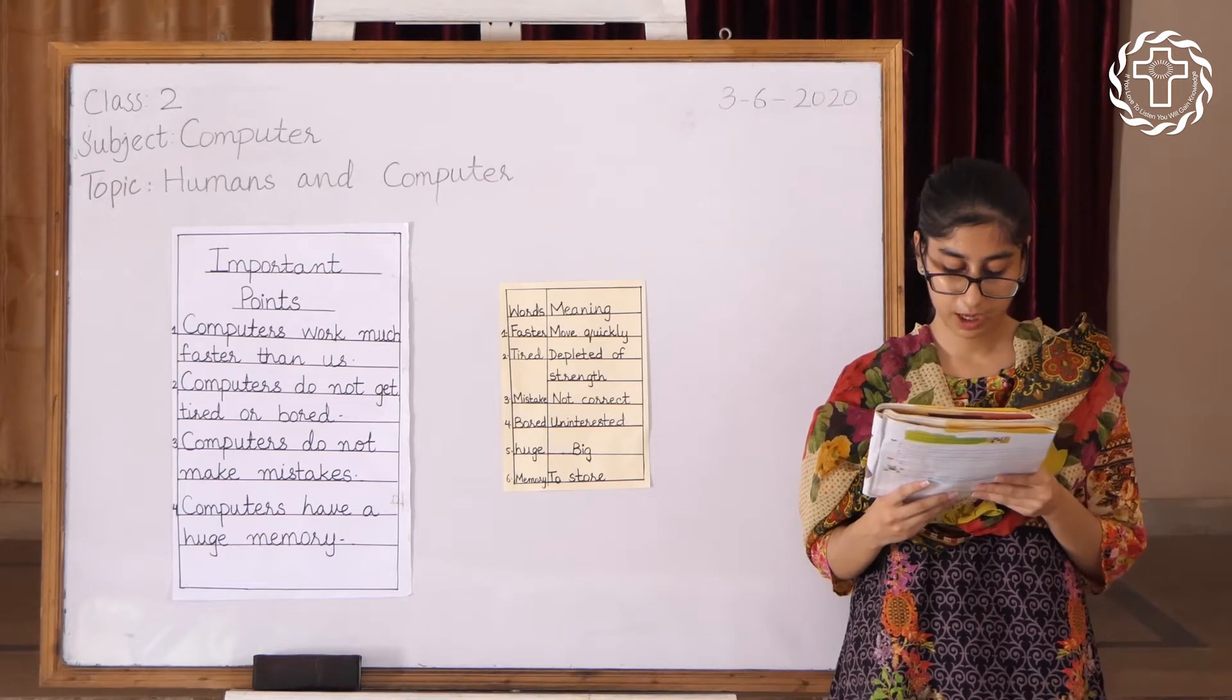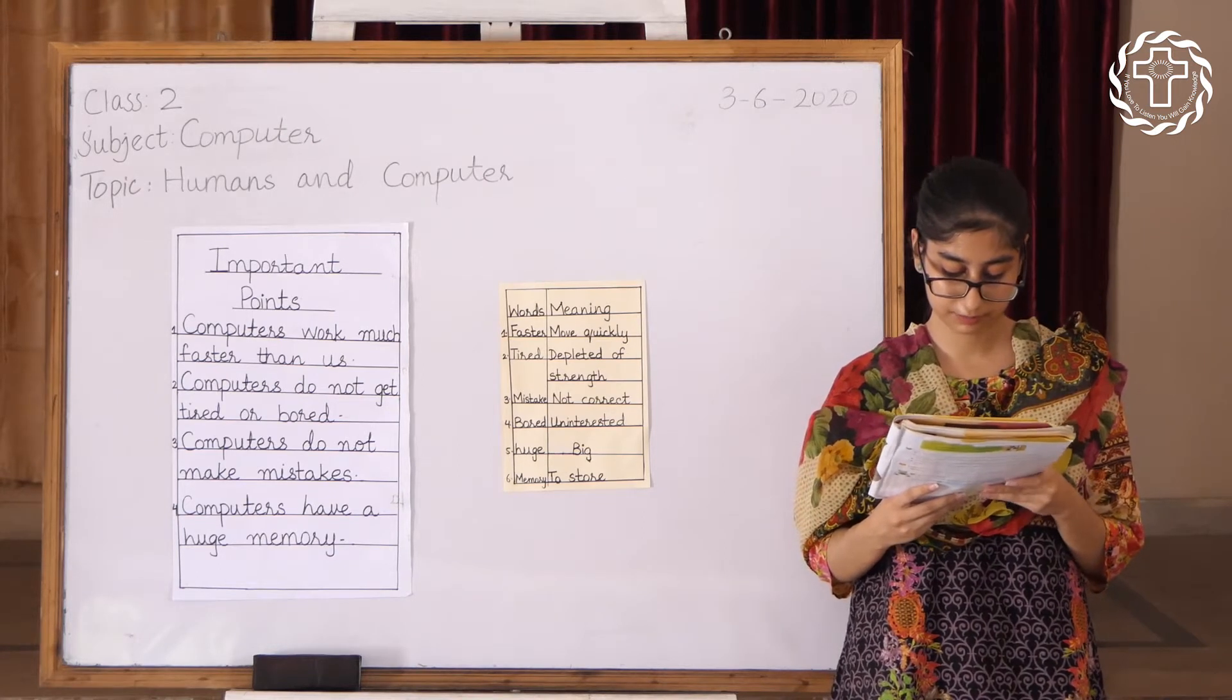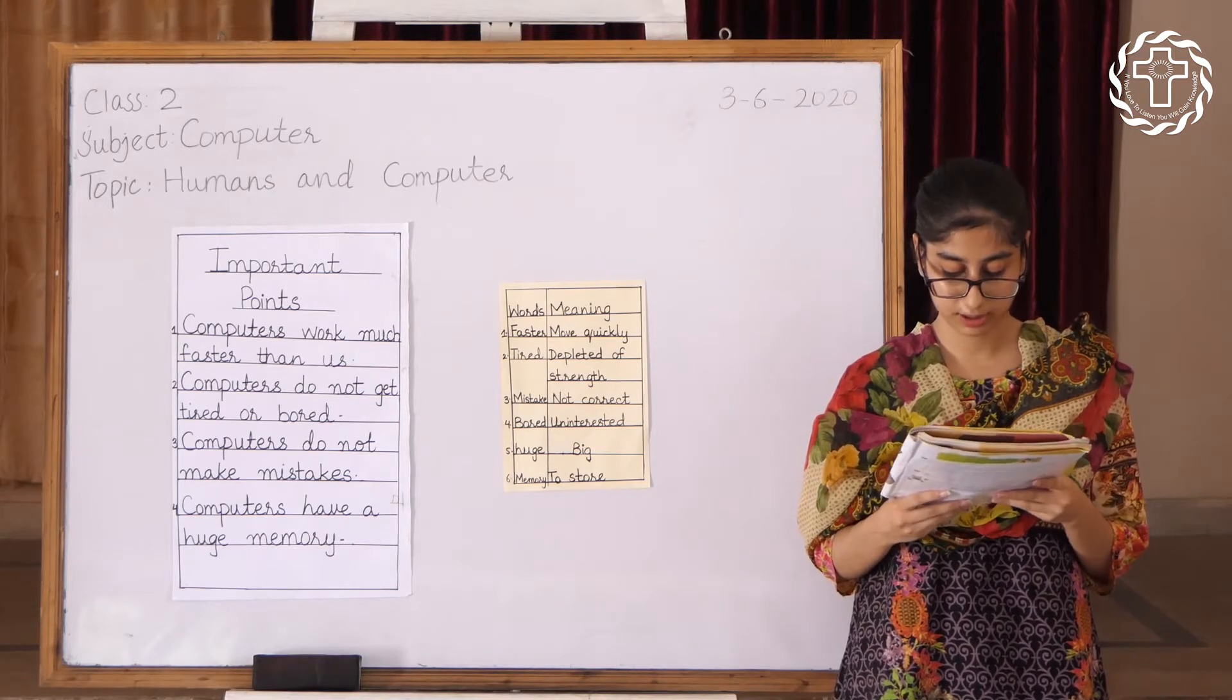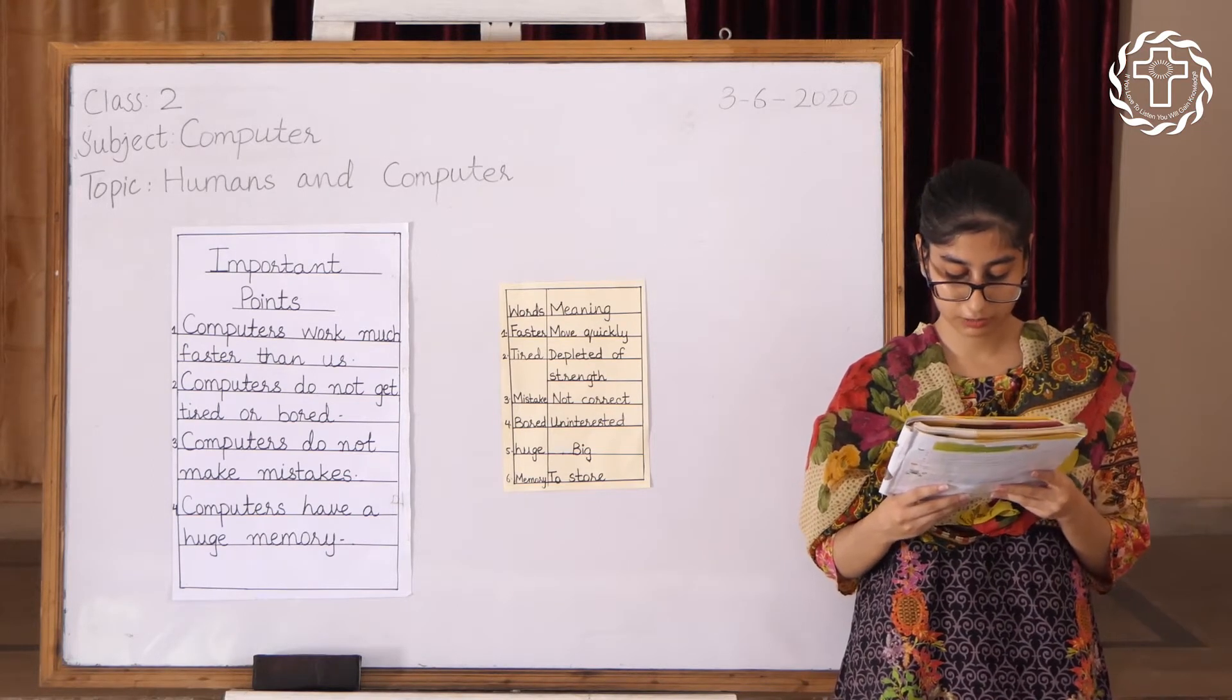Number four: computers have a large memory. We may forget things. Number five: computers can do many things at the same time. We cannot do more than two or three things at a time.